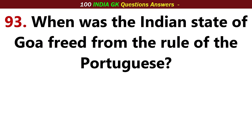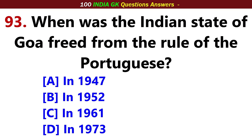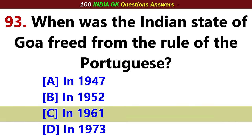When was the Indian state of Goa freed from the rule of the Portuguese? Answer, Option C: In 1961.